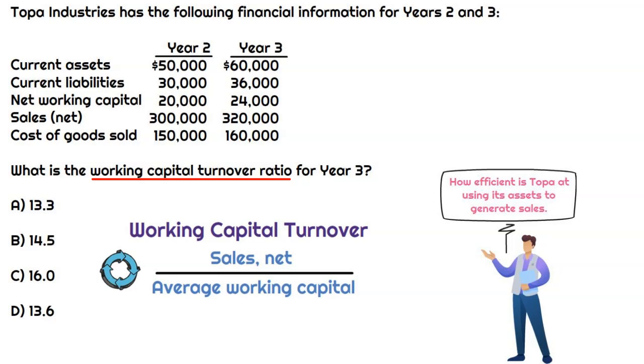When we think about the ratio and the formula, it's just net sales divided by average working capital. So for year three, sales would be three hundred and twenty thousand dollars.